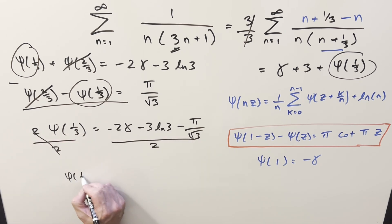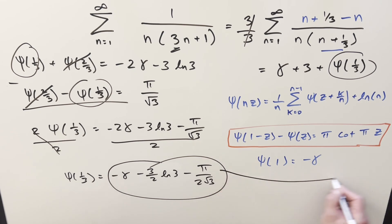And so for our value, digamma of 1 third, we're going to have just minus the constant, minus 3 over 2, ln 3. And over here, minus pi 2 square root of 3. So all I need to do is let's just take this, plug it back in over here, and finish it off.